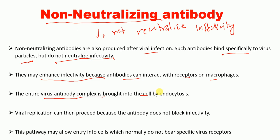The virus-antibody complex is brought into the cell by a process called endocytosis, and virus replication can then proceed — because these non-neutralizing antibodies do not block infectivity, virus replication proceeds. This pathway may also allow entry into cells which normally do not bear specific virus receptors.